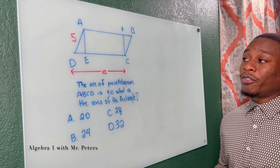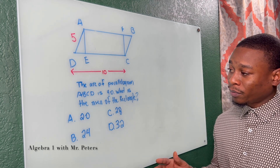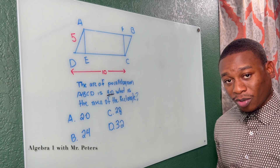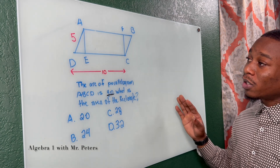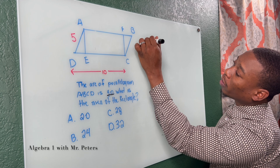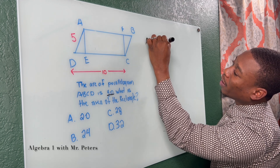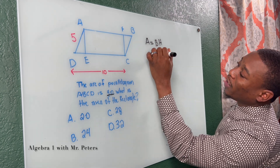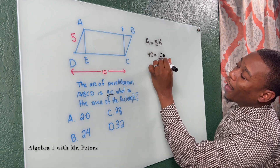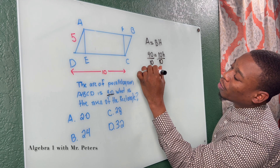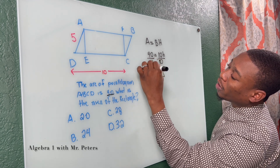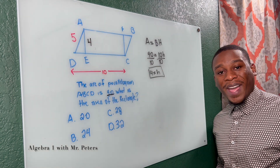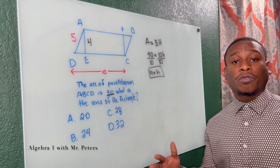Last problem. They said the area of parallelogram ABCD is 40, and they're asking what is the area of the rectangle. Area of a parallelogram equals base times height. We know 40 equals the area and the base is 10, so the height has to be 4. So H equals 4.